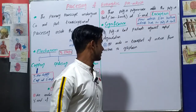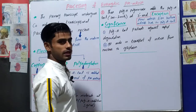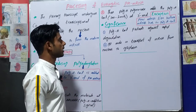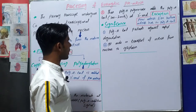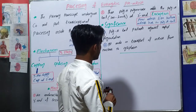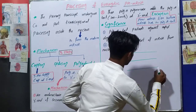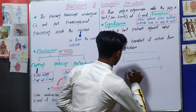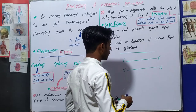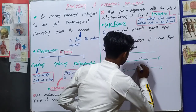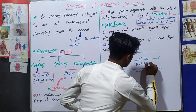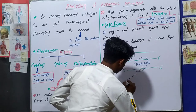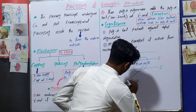Hi guys, this is Jamil, and this is another tutorial about biochemistry. We were discussing transcription and translation, and in this lecture we will discuss the processing of eukaryotic pre-messenger RNA. Let's review: this is a DNA double-stranded molecule with a 5' to 3' coding strand and a 3' to 5' template strand. In transcription, RNA polymerase II acts on the DNA double-stranded molecule and forms the RNA — the messenger RNA.